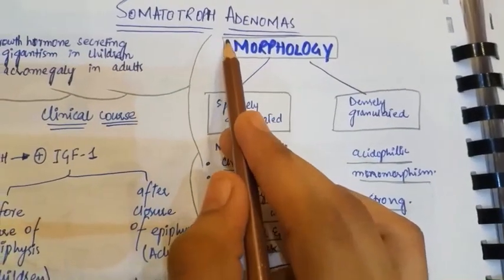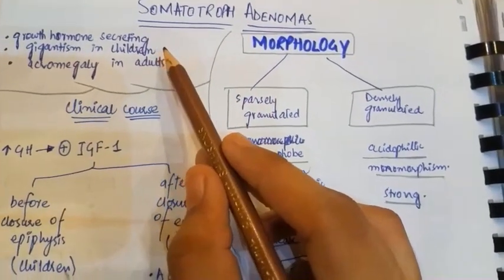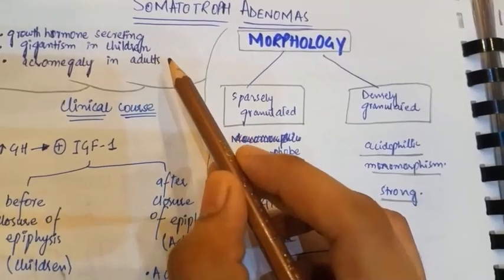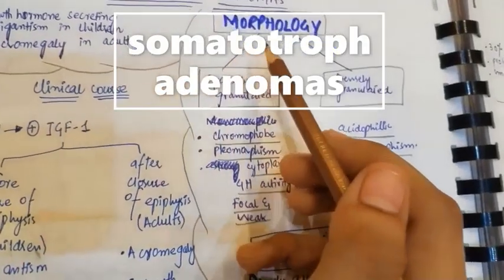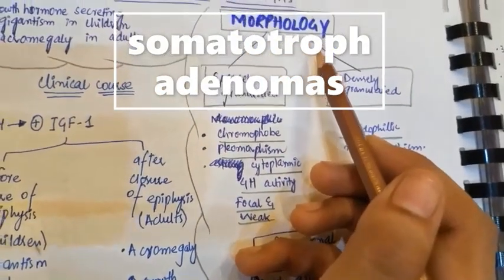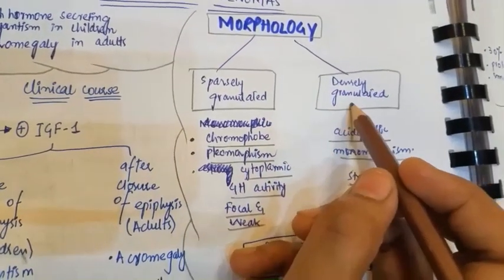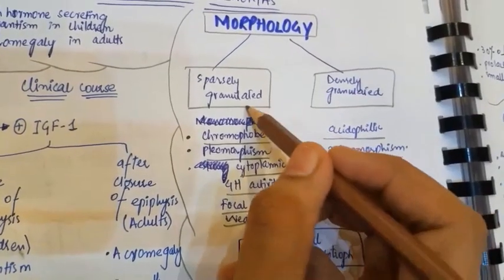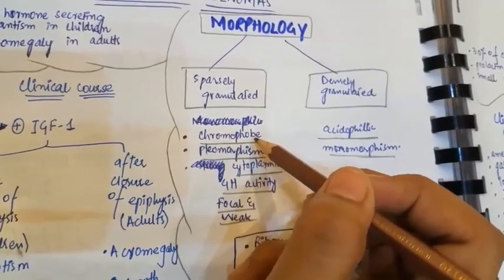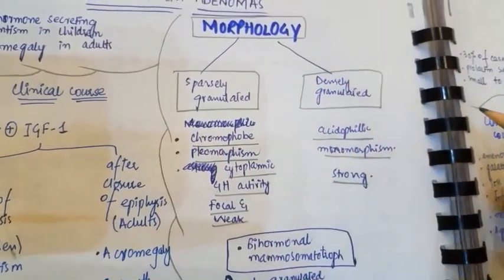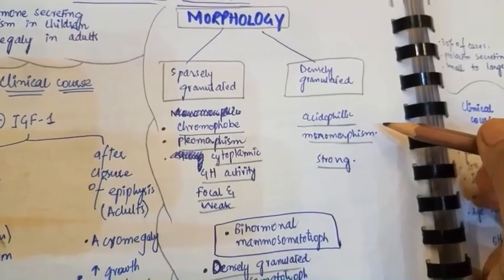Somatotroph adenomas are growth hormone-secreting. If excess growth hormone is present in children, it will cause gigantism; if excess in adults, it will cause acromegaly. Like lactotroph adenomas, the morphology is divided into sparsely granulated adenomas with chromophobic cytoplasm, and densely granulated adenomas with acidophilic cytoplasm.